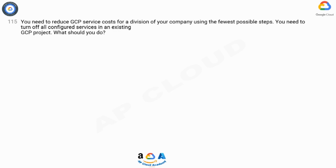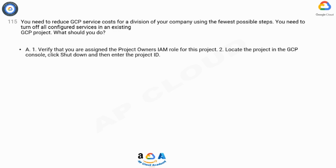Question 115. You need to reduce GCP service costs for a division of your company using the fewest possible steps. You need to turn off all configured services in an existing GCP project. What should you do?